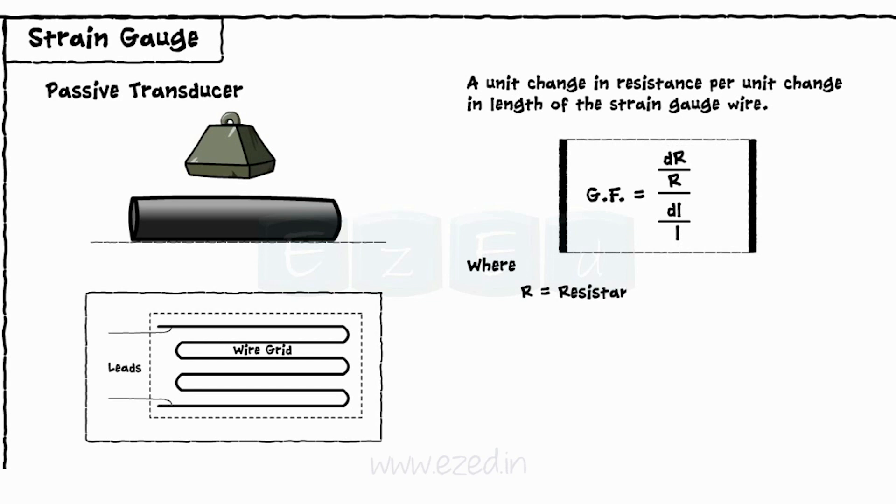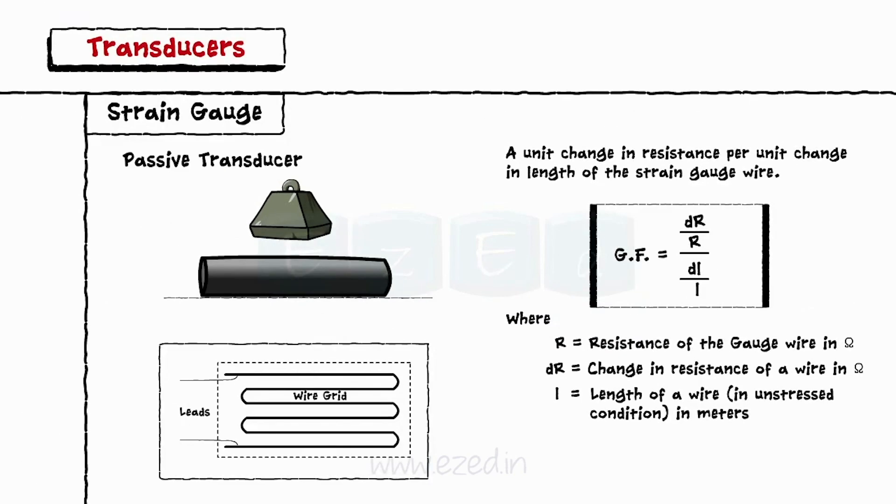Where R equals resistance of the gauge wire in ohms, DR equals change in resistance of a wire in ohms, L equals length of a wire in unstressed condition in meters, DL equals change in length of a wire in stressed condition in meters.